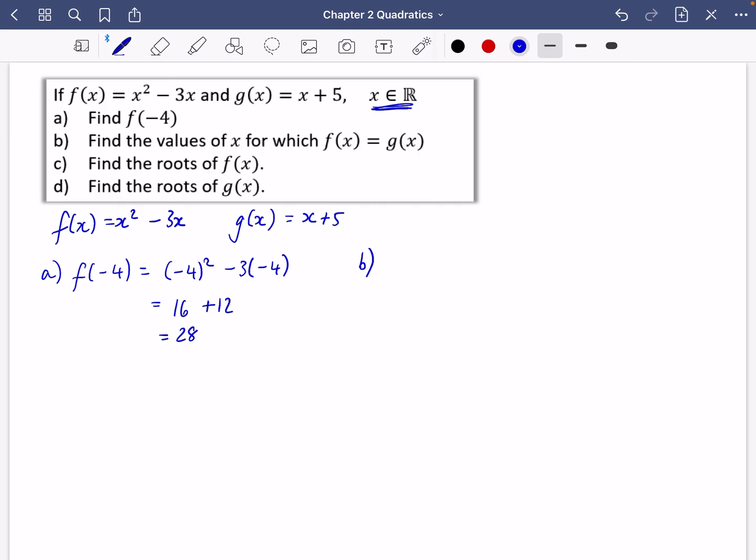Part B of the question says find the values of x for which f of x equals g of x. I'm just going to do what they've said. I'm going to make f of x equal g of x and see what I get. So that's x squared minus 3x equals x plus 5. Getting it all onto one side, that's x squared minus 4x minus 5 equals 0.